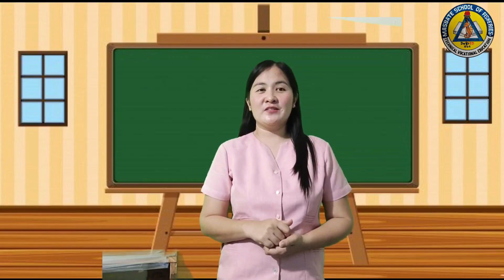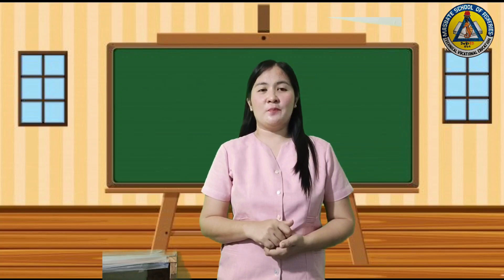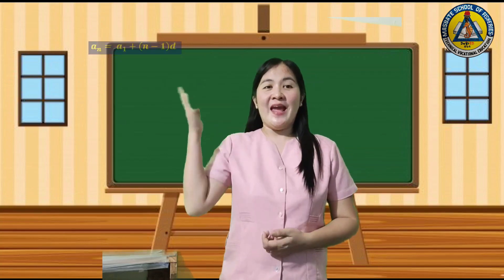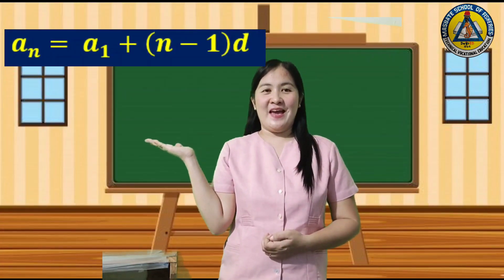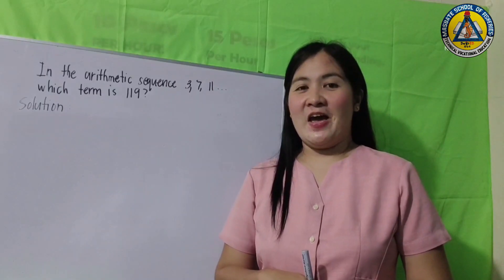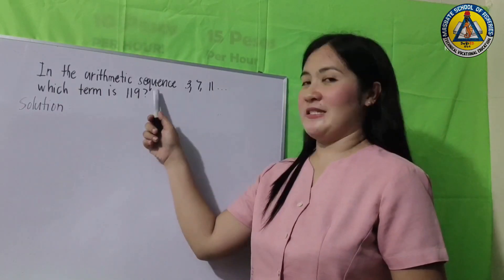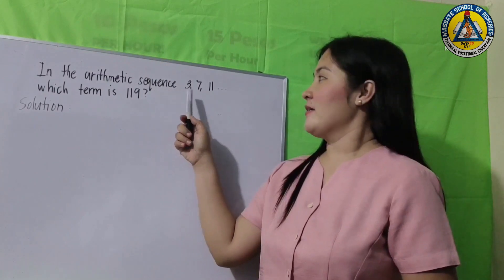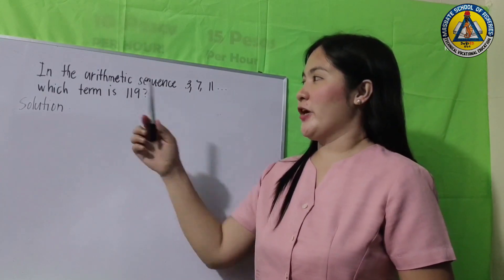The nth term formula of an arithmetic sequence whose first term is a(1) and common difference is d is given by the expression: a(n) = a(1) + (n - 1) × d.